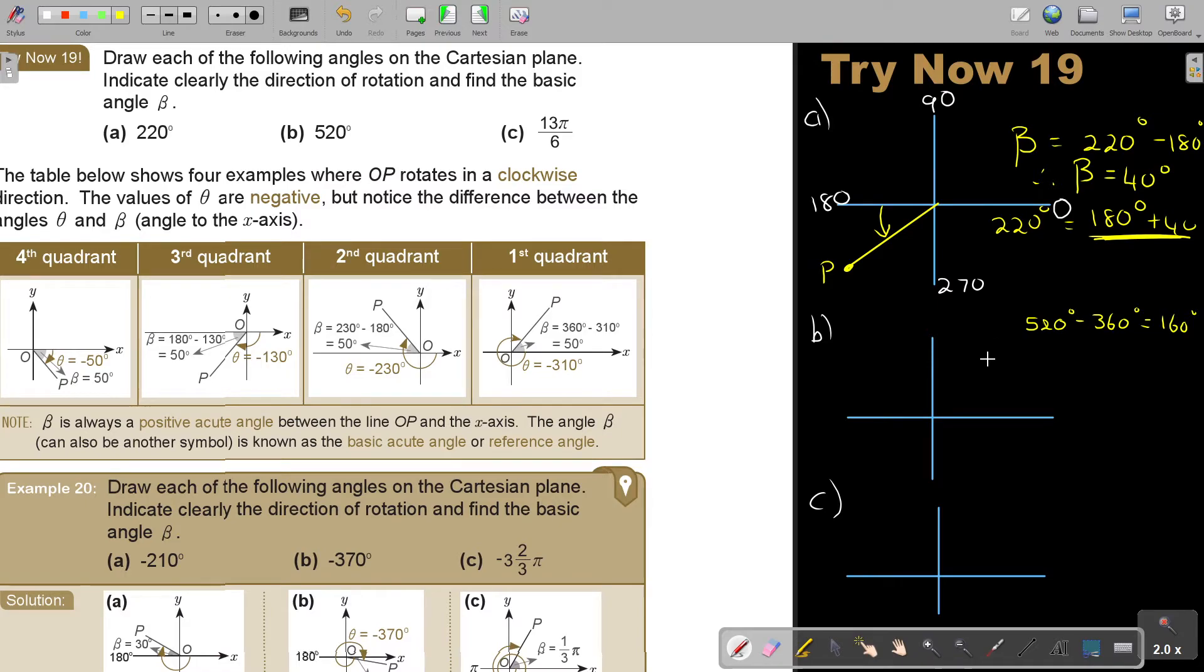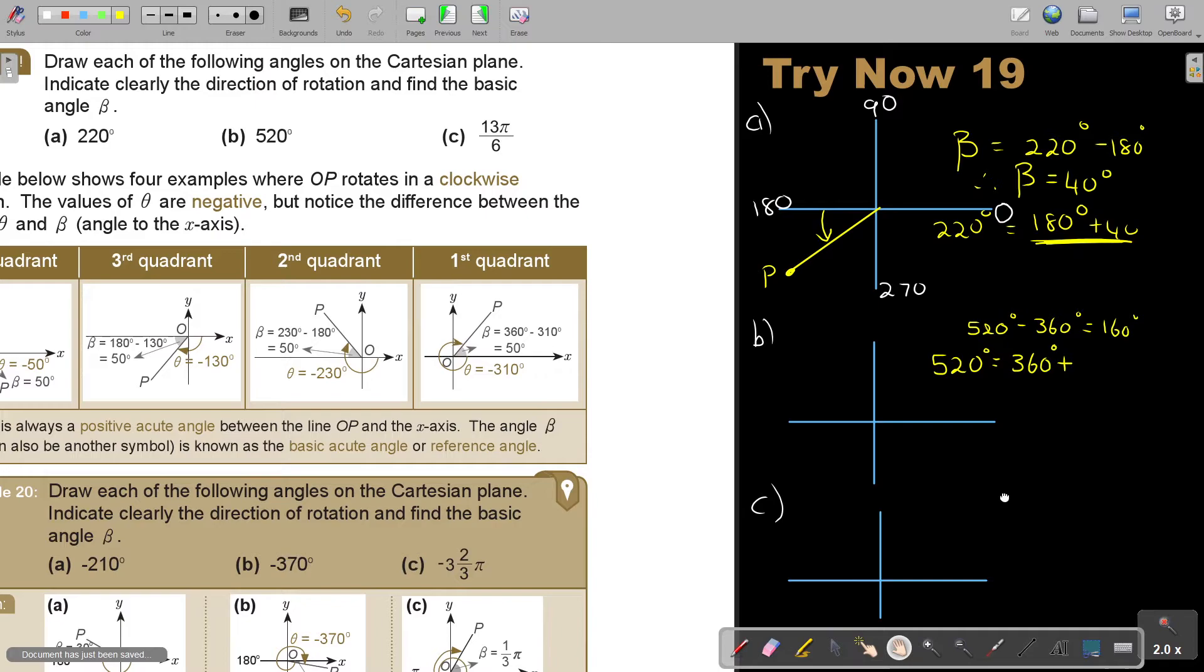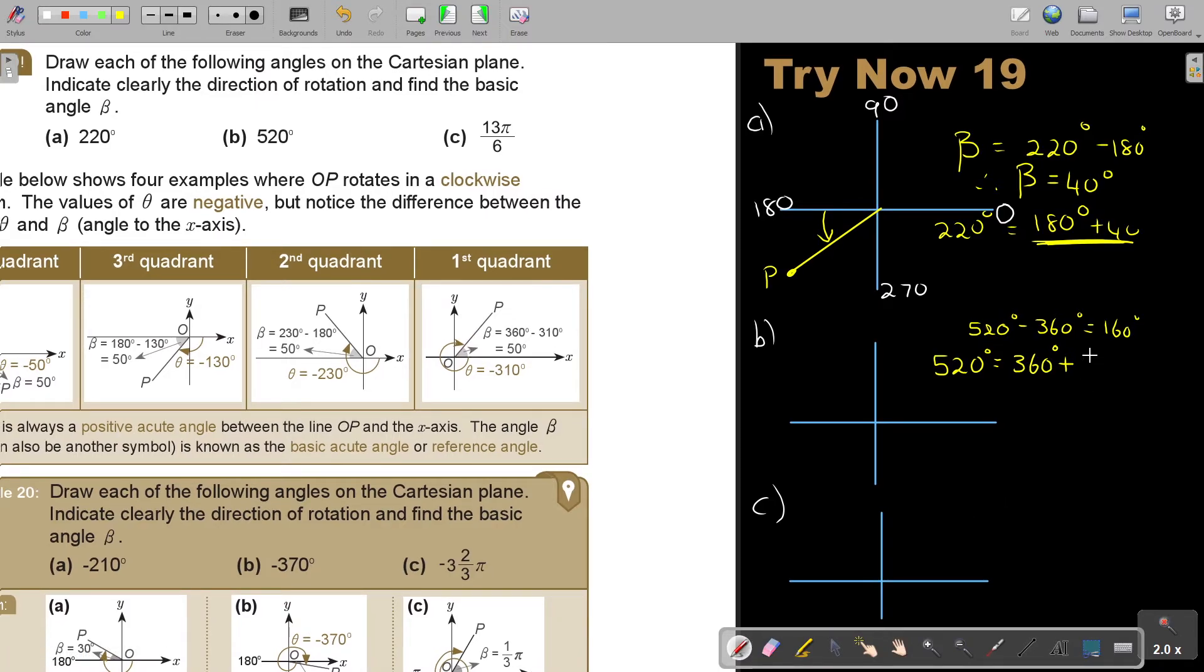But if I write it, now look how I write it. I'm going to say 520 is equal to 360 plus, let's just move a little bit, 360 plus that 160, but the 160 can be broken up into 180 minus 20 degrees.